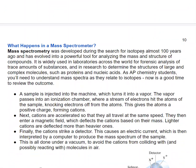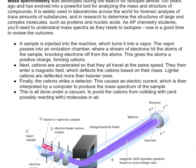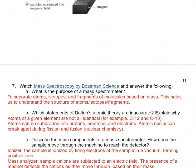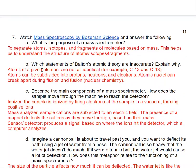So that was just a quick review of isotopes and a little bit of atomic structure. So let's talk about a mass spectrometer. So this is an analytical tool that lets us separate atoms, isotopes, or fragments of molecules based on mass. So this helps us to understand the structure of atoms, isotopes, and fragments.